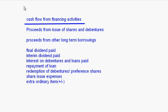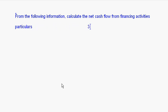Now I will take up a small example. From the following information, calculate the net cash flow from financing activities. The particulars are given for two years: 31st March 2012 and 31st March 2013.